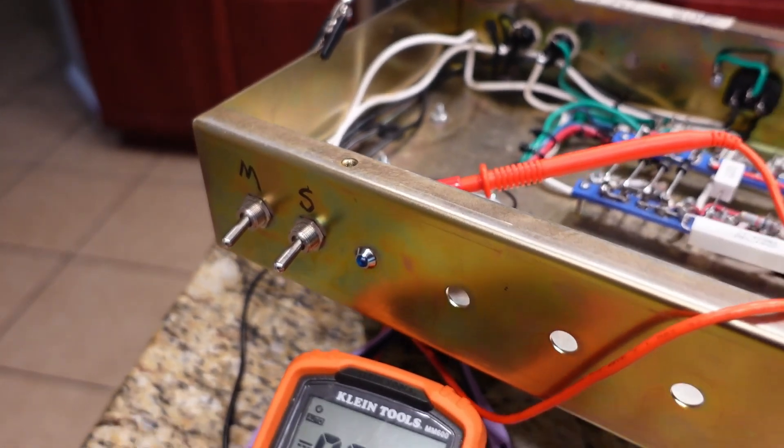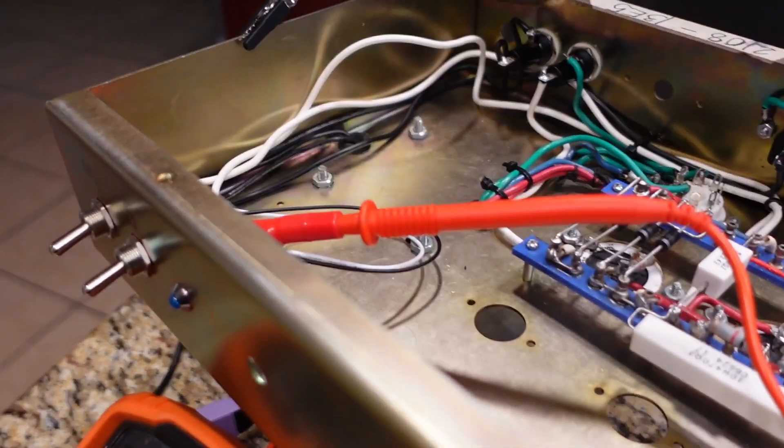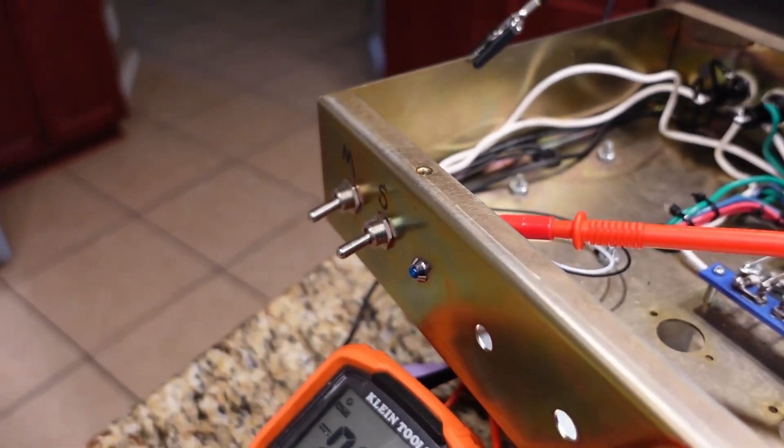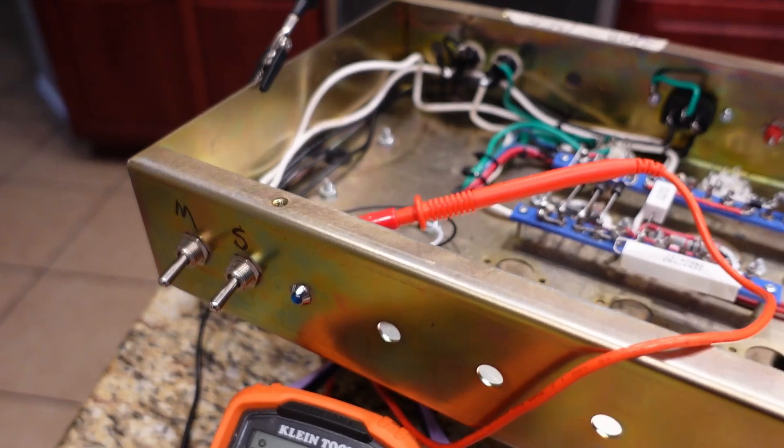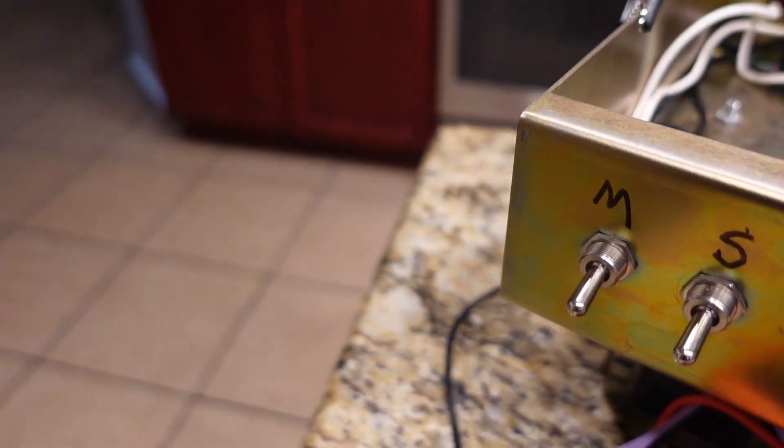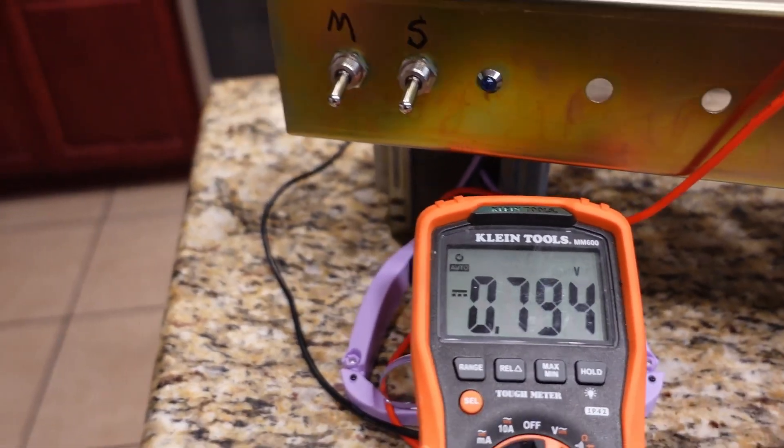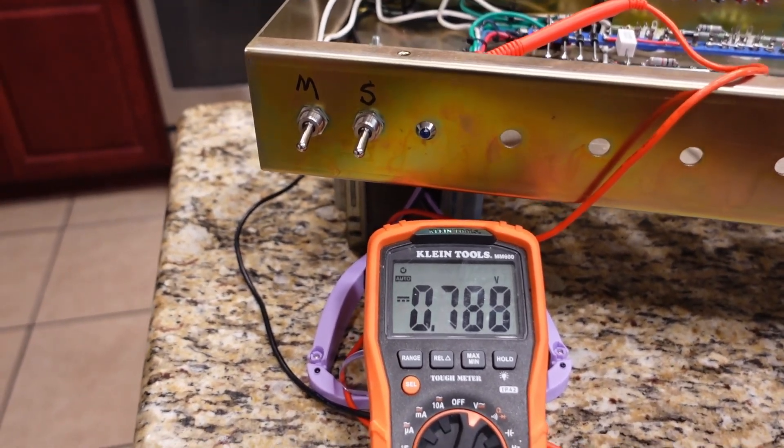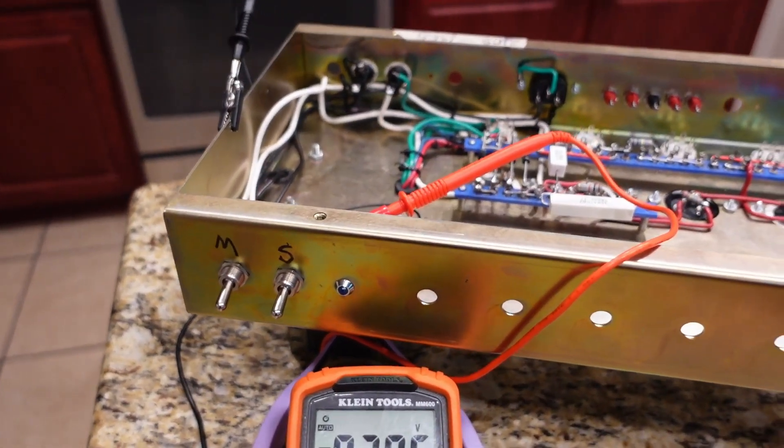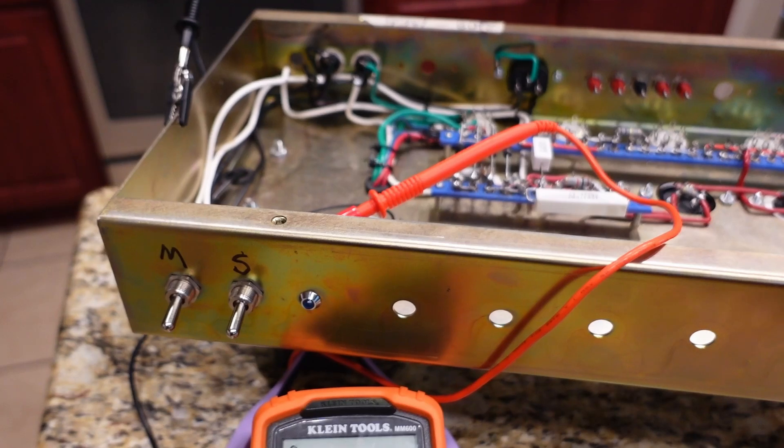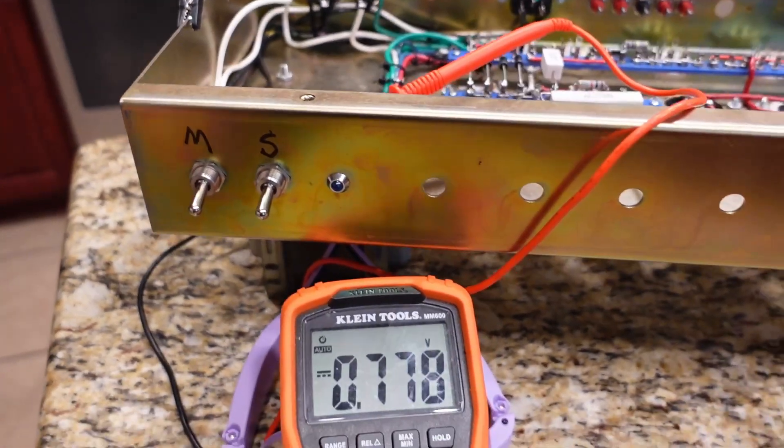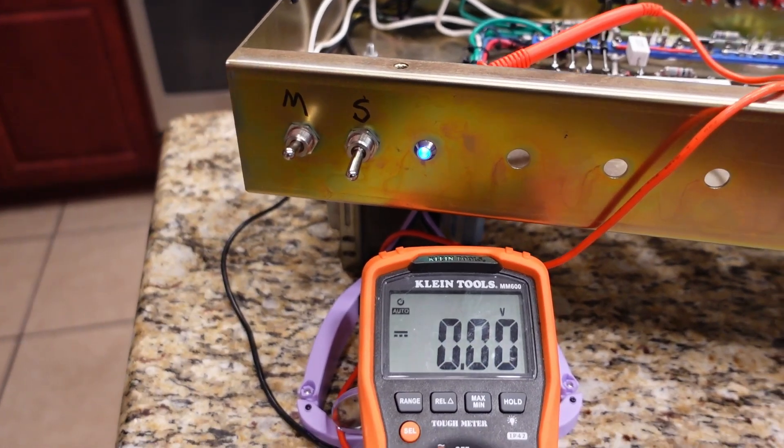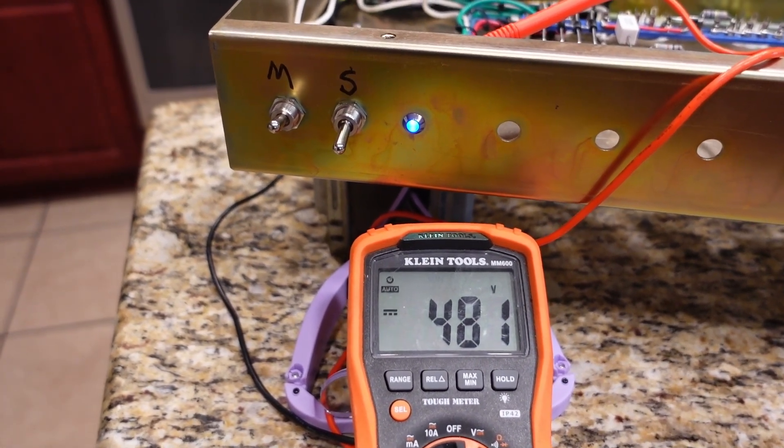I've got my meter hooked up here to the standby switch input terminals. That's the 480 volt supply to the tubes, but it is in the off position, so is the main, and I should get 479, 480 volts. If it doesn't blow up, this is the first time turning this on. Excited as you are. Let's see what happens. Fire in the hole! Oh, look at that!